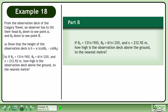Now we'll move on to part B. If theta A equals 131 pi over 900, theta B equals 61 pi over 200, and x equals 212.92 meters, how high is the observation deck above the ground to the nearest meter?